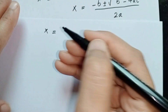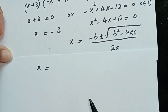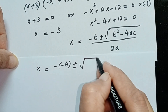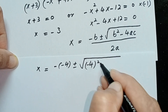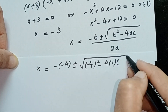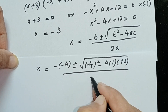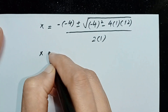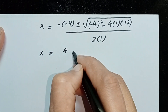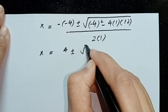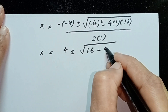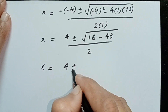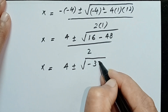Substituting: x = (−(−4) ± √((−4)² − 4·1·12)) / (2·1), which gives x = (4 ± √(16 − 48)) / 2, and then x = (4 ± √(−32)) / 2.